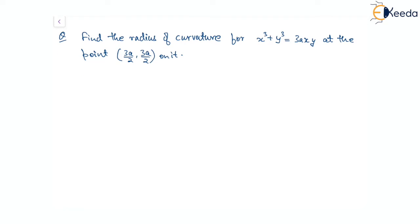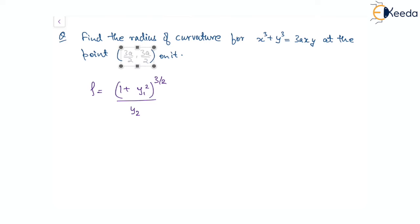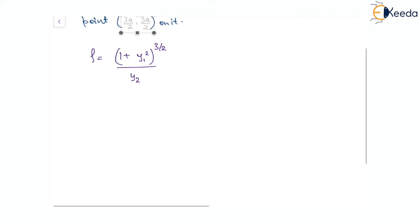We know that the radius of curvature ρ is given by the expression (1 + y1²)^(3/2) divided by y2. This means we will have to find y1 and y2, and then evaluate them at the point (3a/2, 3a/2).